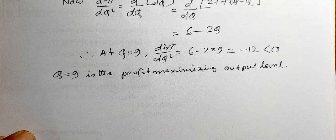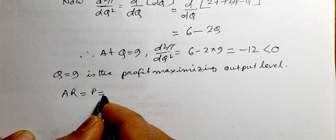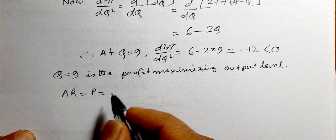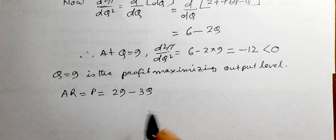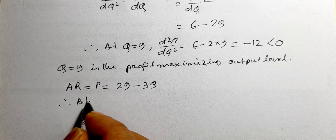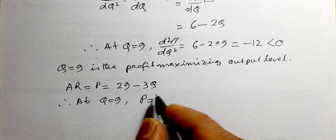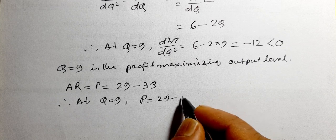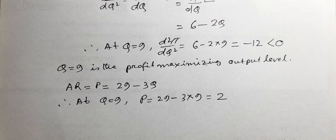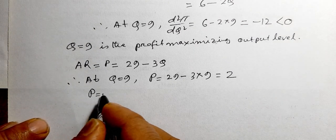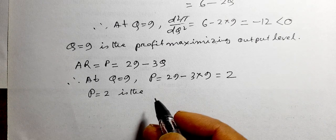We know that average revenue equals the price. Average revenue is given as 29 minus 3q. Therefore, at q equals 9, price p equals 29 minus 3 times 9 equals 29 minus 27 equals 2. So p equals 2 is the profit-maximizing level of price.